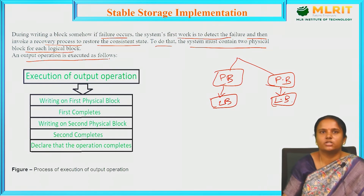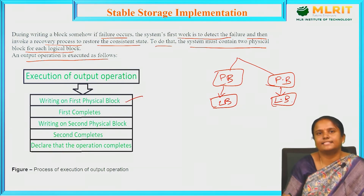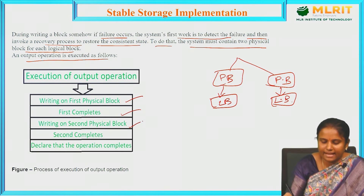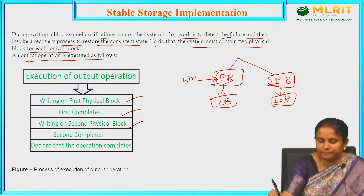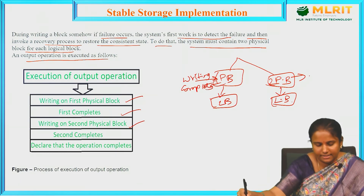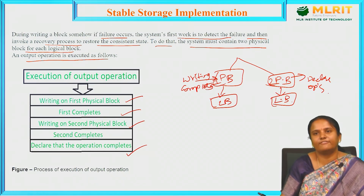An output operation is executed for the following stable storage implementation. The execution of the output operation involves writing on the first physical block — you write some data on the first physical block and it completes. Then writing on the second physical block — you write data on the second physical block and it completes. This is how the process executes each step one by one according to the output operation for stable storage implementation.